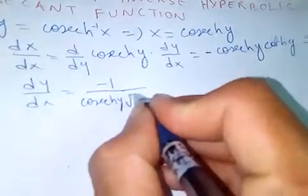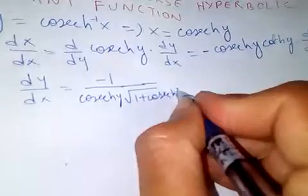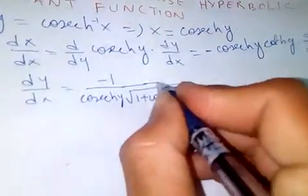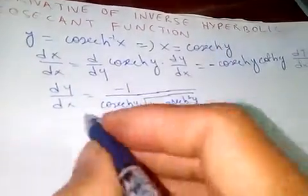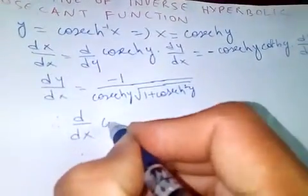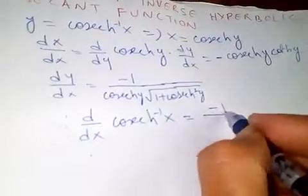...is what? Square root of one plus cosecant hyperbolic square y. Therefore, the derivative of cosecant hyperbolic inverse of x is minus...